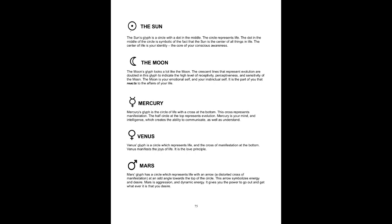Venus. Venus' glyph is a circle which represents life, and the cross of manifestation at the bottom. Venus manifests the joys of life — it is the love principle.